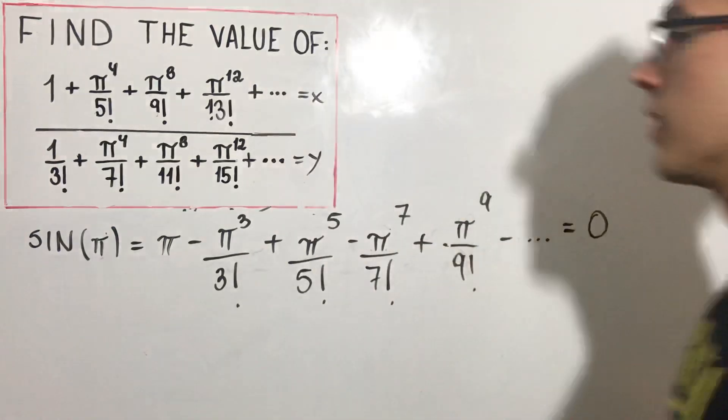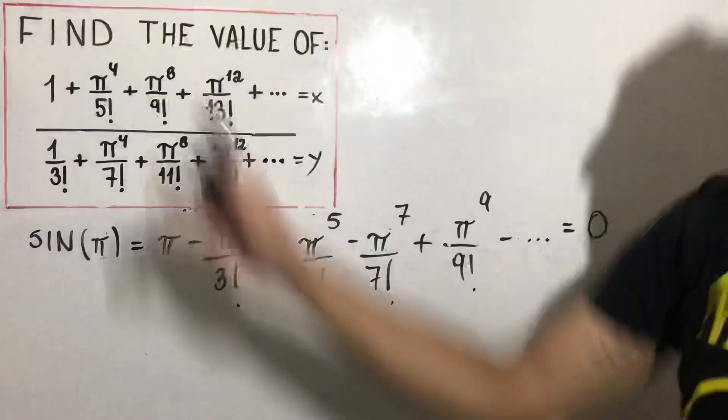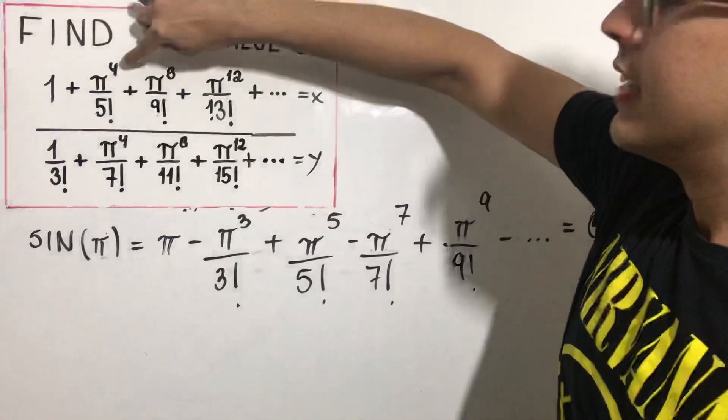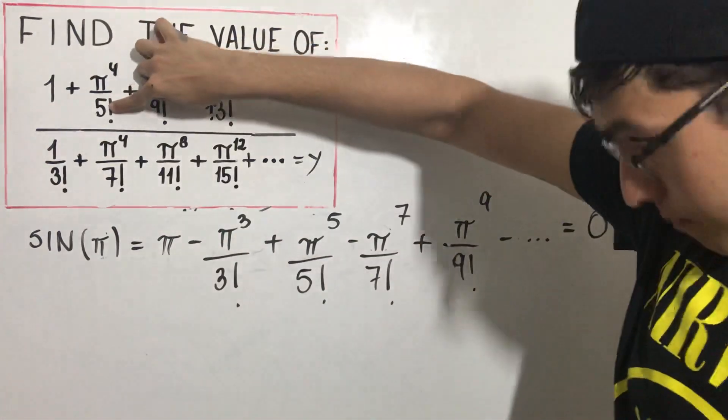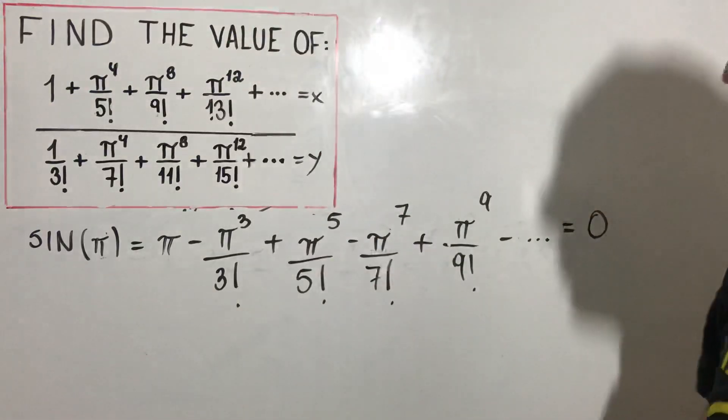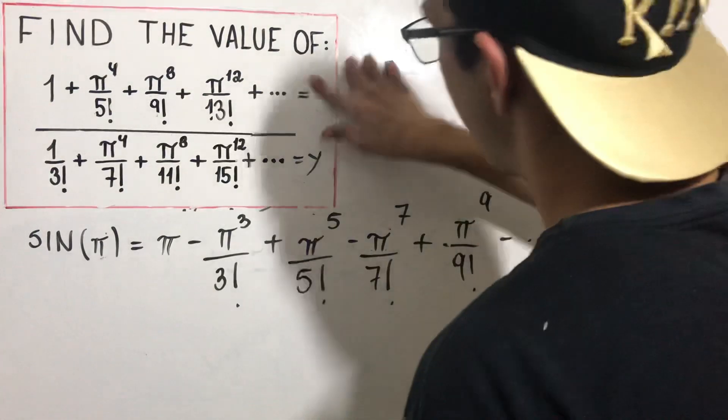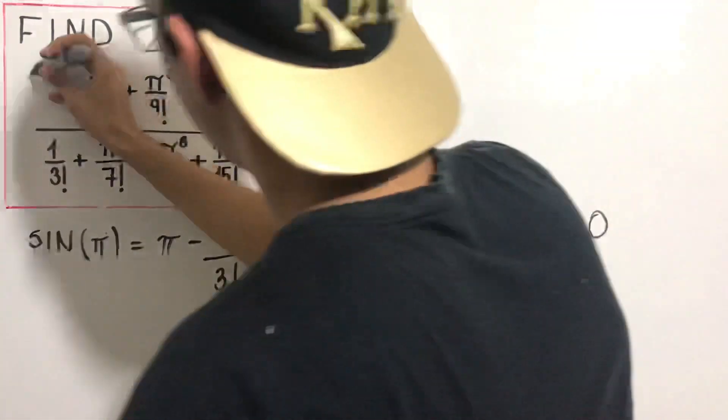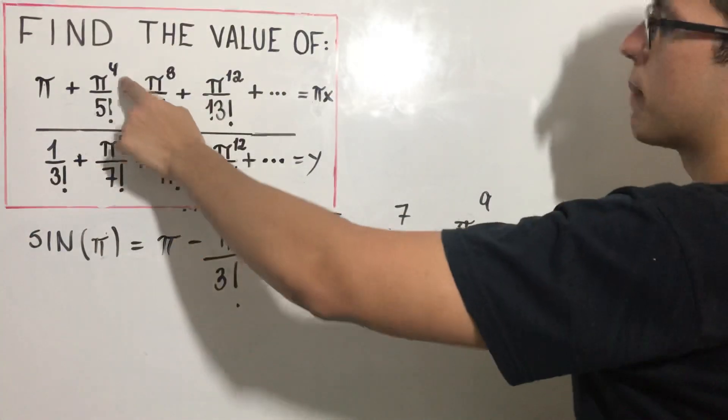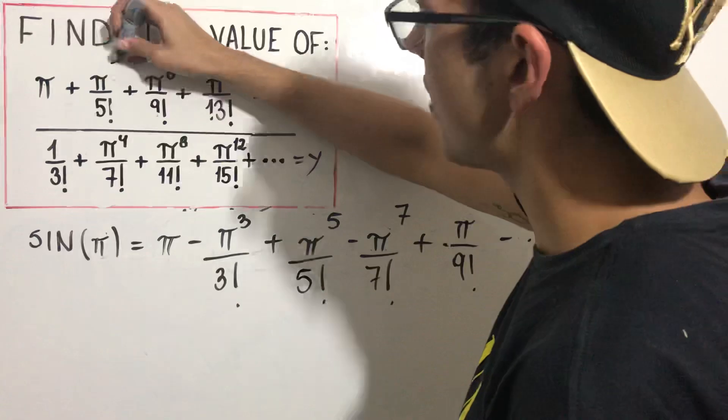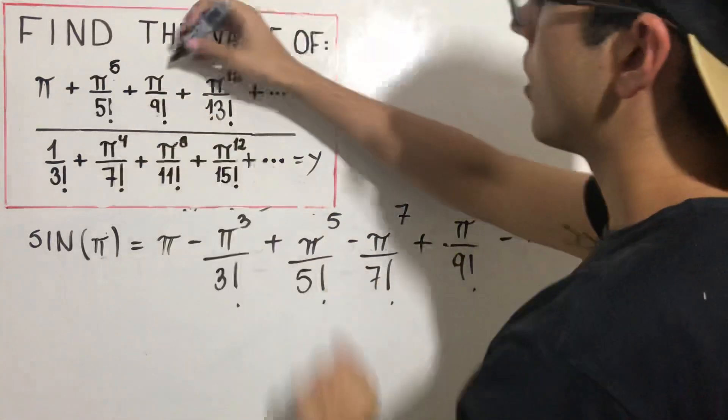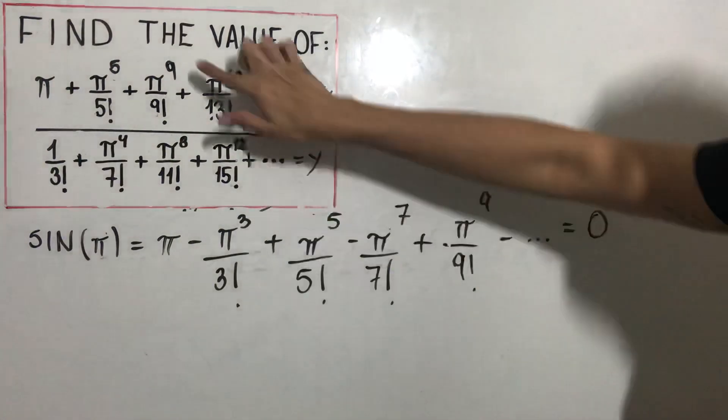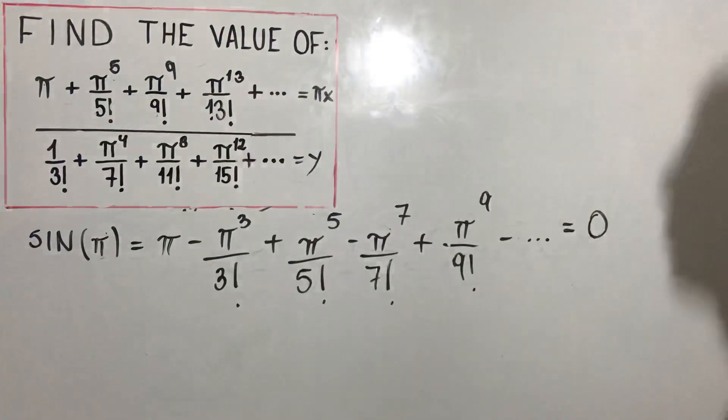And now, what am I going to do? The first one, I'm going to multiply by π. Why am I going to multiply by π? Because I want this and this to be the same for each one. So I'm going to multiply by π. π times x, π times x, so π times 1 is π. π times π^4 is π^5, π^9, π^13. And I made it, exactly what I was looking for.